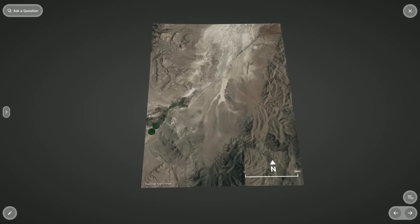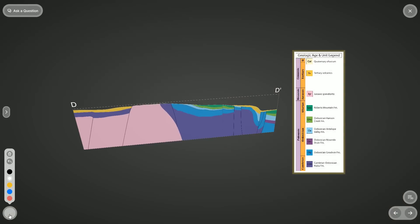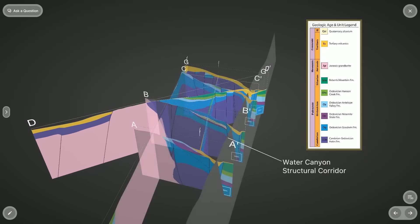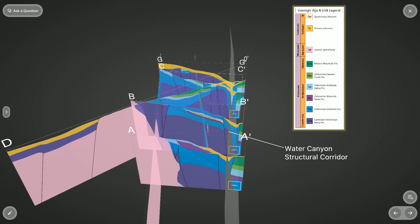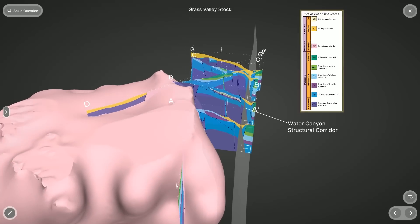The main features that define this newly discovered and otherwise blind mineral system continue to be a thick sequence of lower plate bedrock containing a highly permissive host unit called the Hales that sits under a less reactive cap rock, the Goodwin, that has been broken by the complex and deep-seated Water Canyon structural corridor along the margins of the Jurassic Age Grass Valley stock.